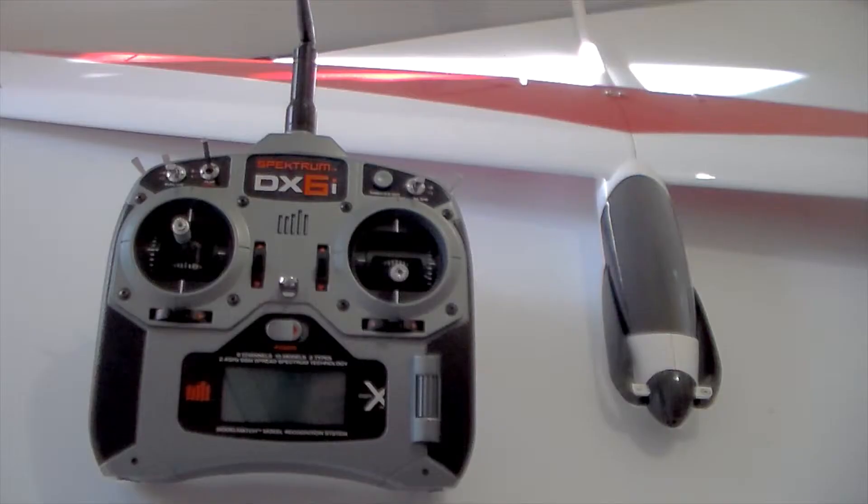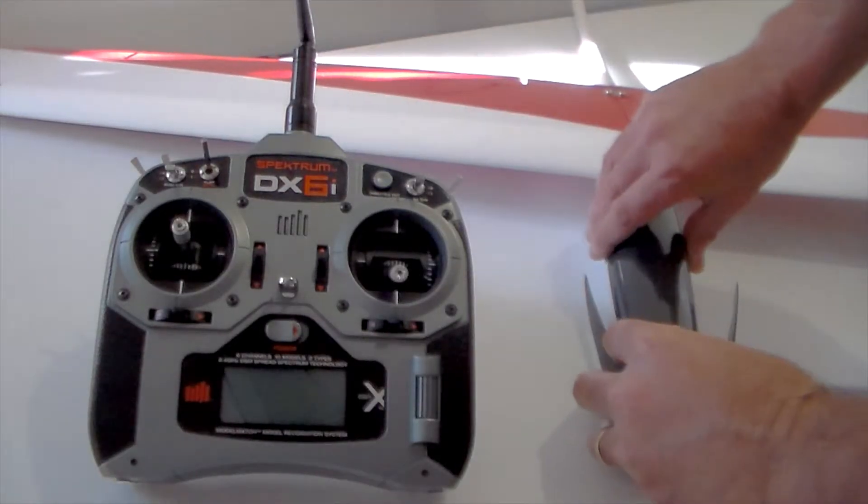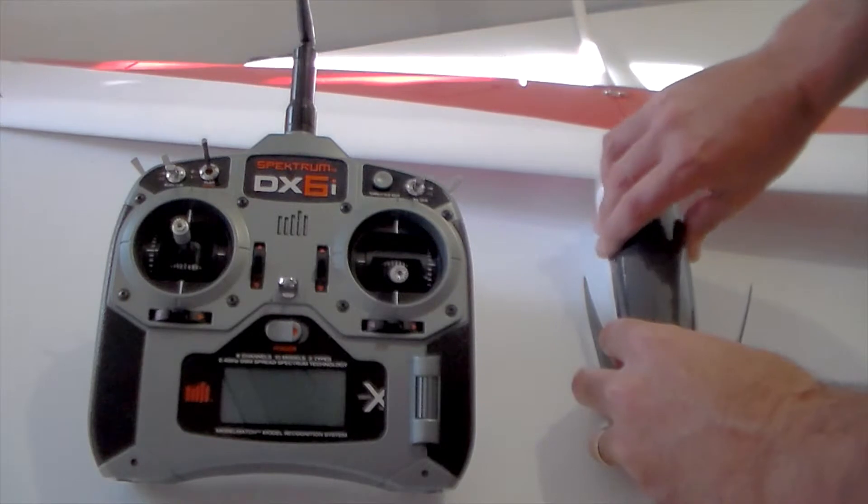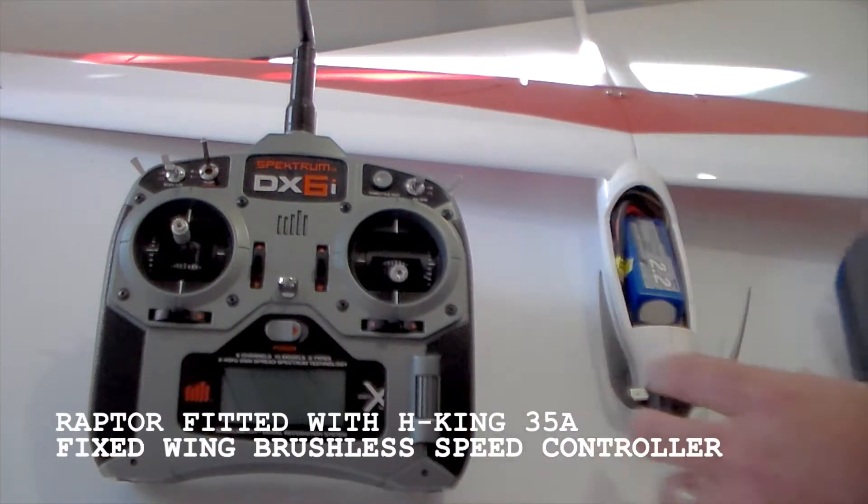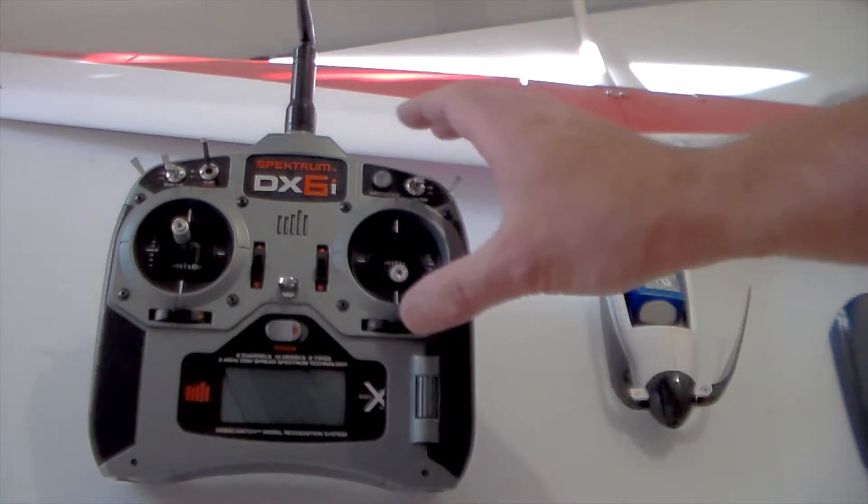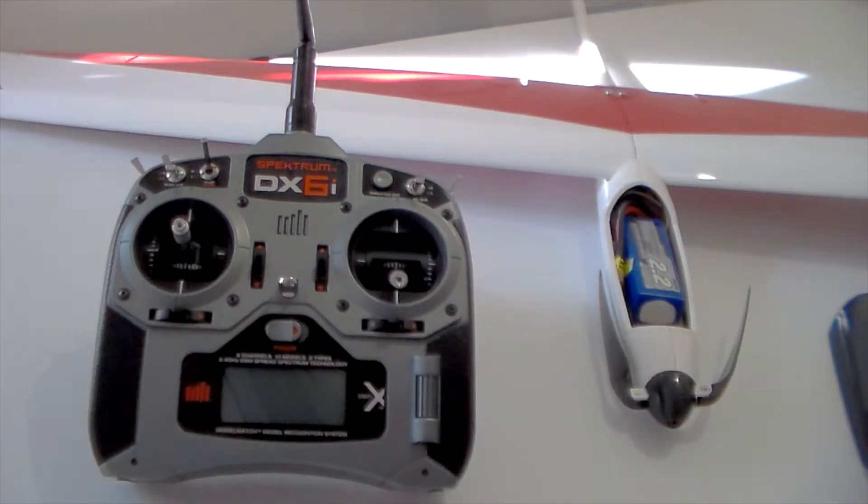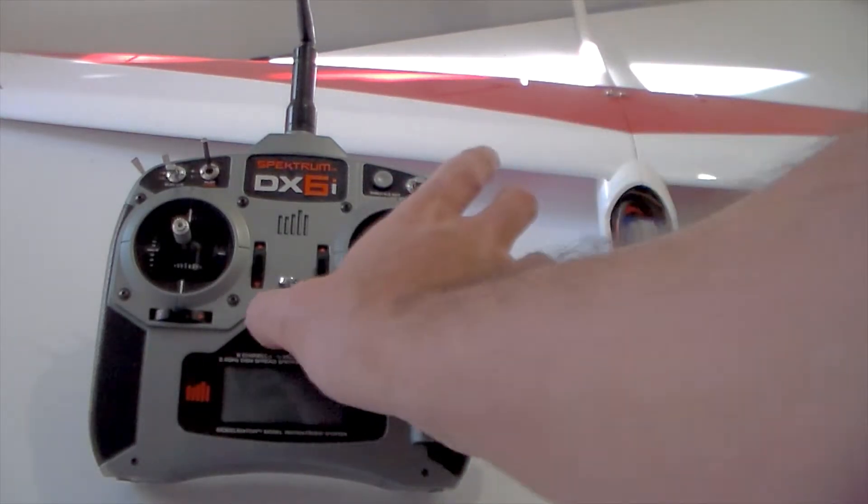We're going to go through reprogramming the H-King ESC. What I want to do with the Raptor is set the brake. You basically just need to cycle through the program. With the H-King, it's a bit of a complicated procedure, so I thought I'd just go through it.